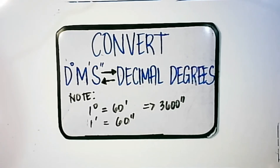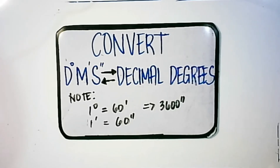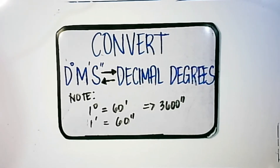To convert DMS form into decimal degrees and vice versa, we need to remember that in one degree, that is equal to 60 minutes. And in one minute, that is equal to 60 seconds. So if we express one degree into seconds, that is also equal to 3,600 seconds.